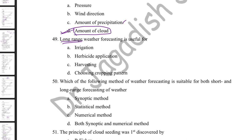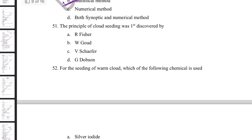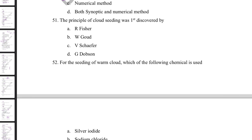Long-range weather forecasting is useful for choosing cropping patterns. There are different types of weather forecasting: now-casting, short-range, medium-range, and long-range. Which method is suitable for both short and long-range forecasting? The statistical method — using regression models — is useful for both. The synoptic method is for short-range, and the numerical method is for medium-range weather forecasting.